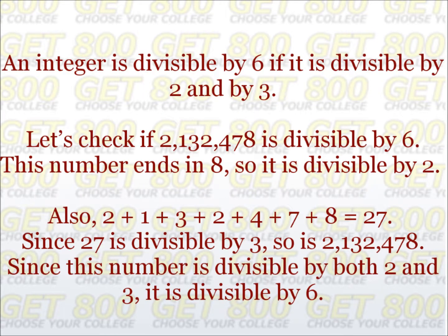An integer is divisible by 6 precisely when it is divisible by both 2 and 3. You will use each of those divisibility rules to determine if the number is divisible by 6. Let's check if 2,132,478 is divisible by 6. The number ends in an 8, so it's divisible by 2. When we add up the digits — 2, 1, 3, 2, 4, 7, and 8 — we get 27. Since 27 is divisible by 3, so is the original number. Therefore, 2,132,478 is also divisible by 6.